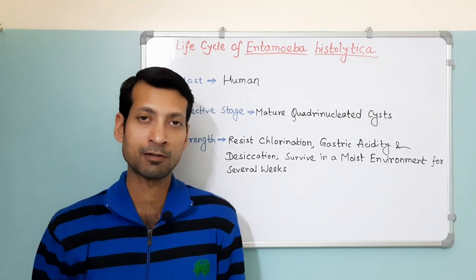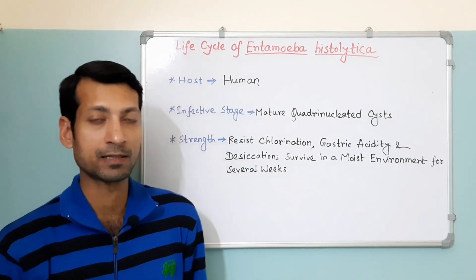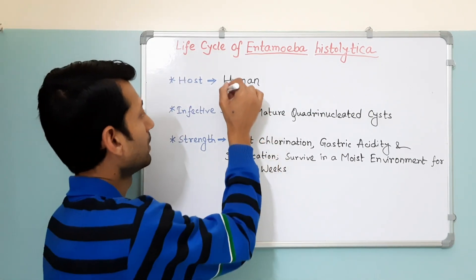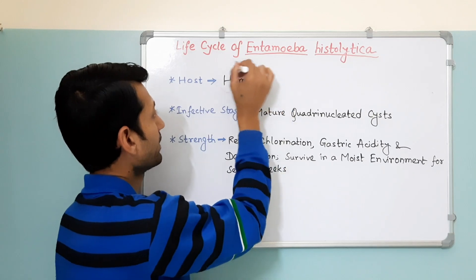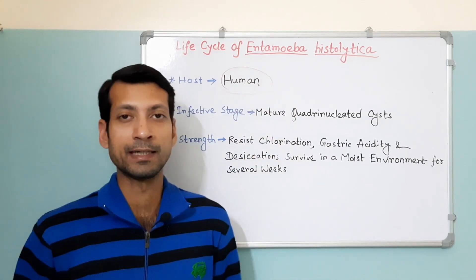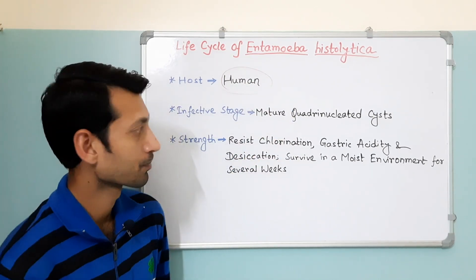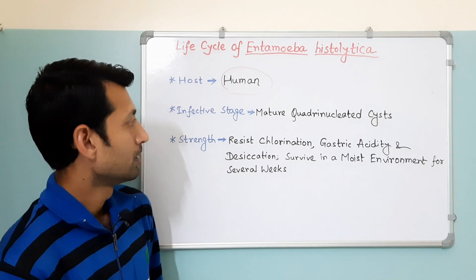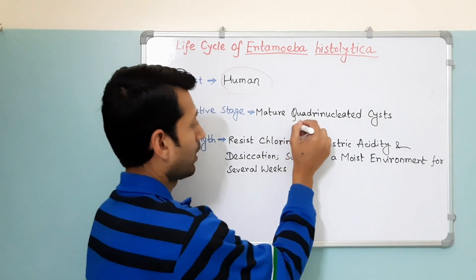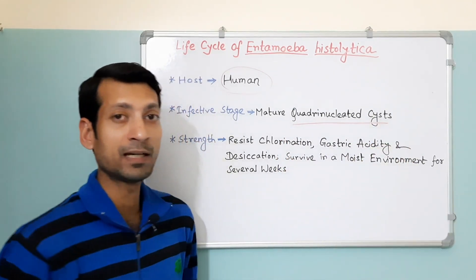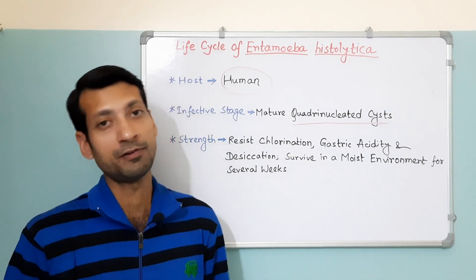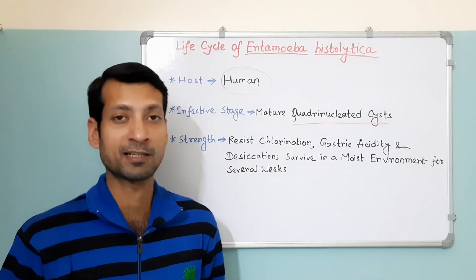Entamoeba histolytica requires only one host, that is human, to complete its life cycle. Mature quadrinucleated cysts are the infective stage of Entamoeba histolytica.